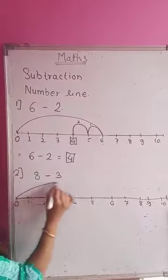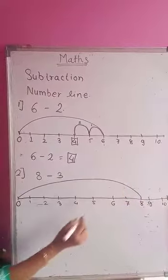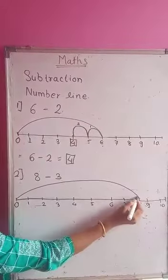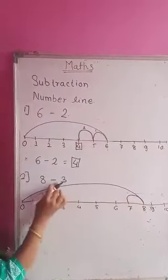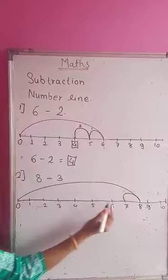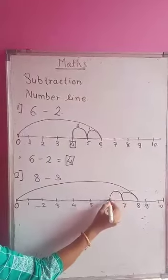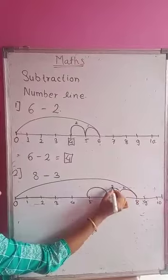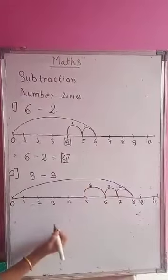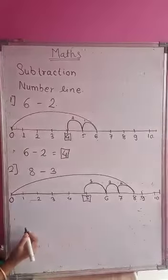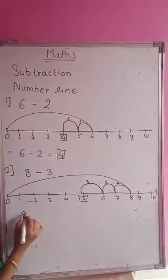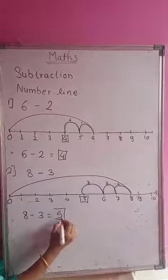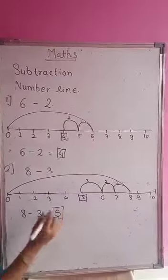So jump directly on 8. We are going to do subtraction, so jump backward. How many jumps do we need here? 3. Three jumps. 1, 2, and 3. Which number do we get? We get 5. So what is the answer? 8 minus 3 equals 5. So 5 is our answer.